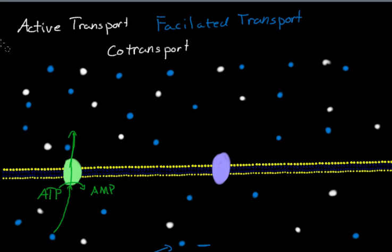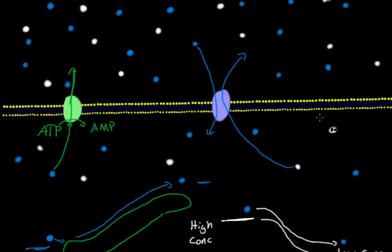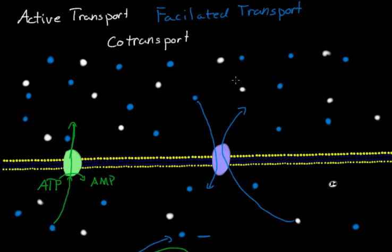With this, you need one molecule going across the simport, while another one goes across as well. Now this is actually called a secondary active transport. Now it doesn't require ATP. It requires the act of what ATP has done. ATP has brought up all these molecules. So now they're at this high concentration and they want to get down.